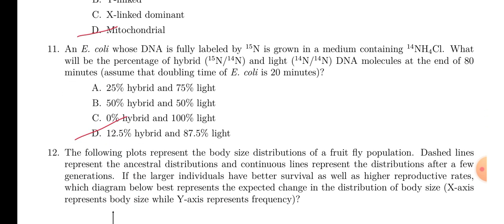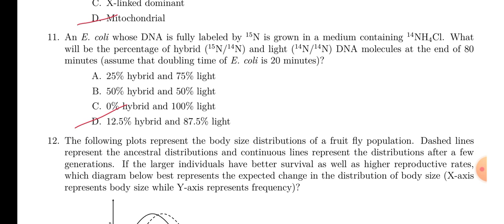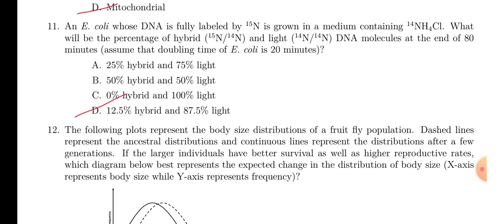In question number 11, the famous experiment by Meselson and Stahl, you have to find out the percentage of hybrid and light band after 80 minutes. Now, you can remember the picture. Here, in the first 20 minutes, there will be all hybrid. In the next 20 minutes, 50% hybrid, 50% light. In the next 20 minutes, 25% hybrid and 75% light band will be there. And what will happen after 80 minutes?